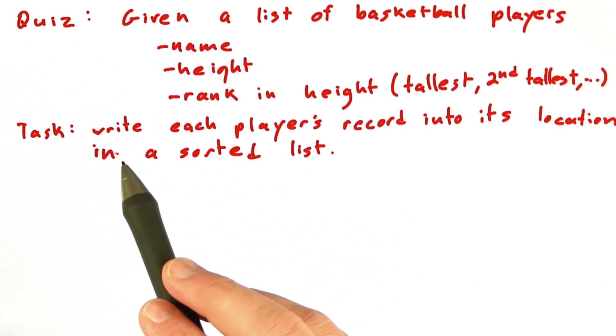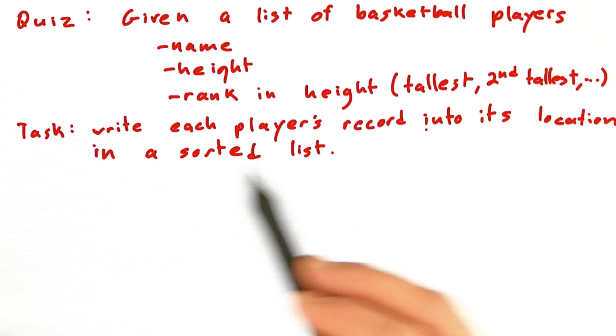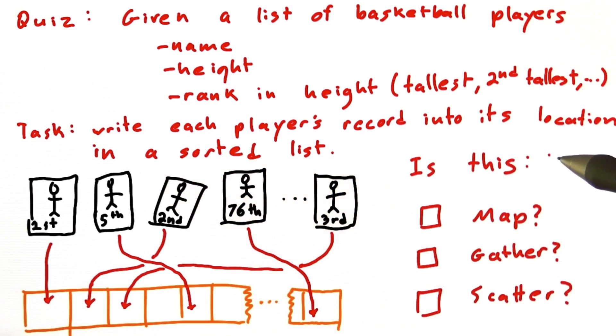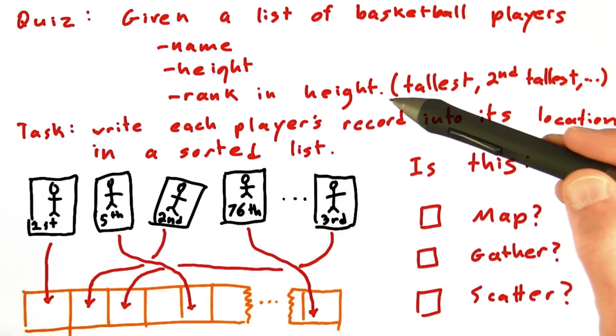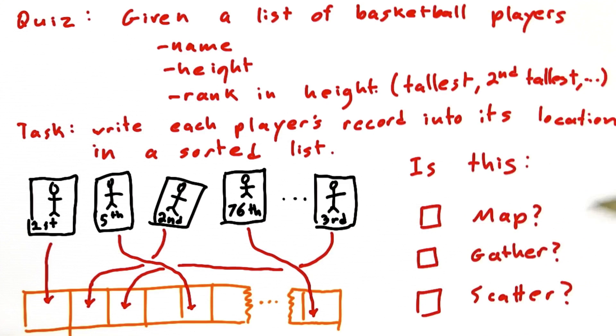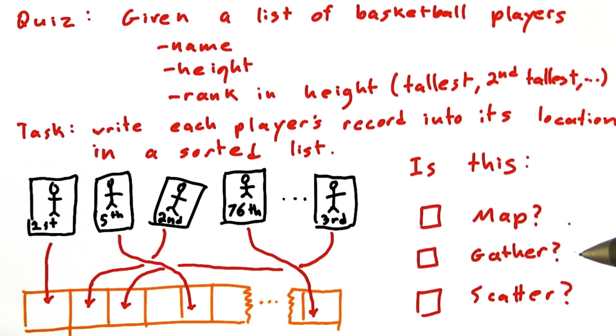Say that your goal now is to write each player's record into its location in a sorted list. If we implement this in CUDA by having each thread read a record, look at the rank, and use that rank to determine where to write into the array, is this a map operation, a gather operation, or a scatter operation?